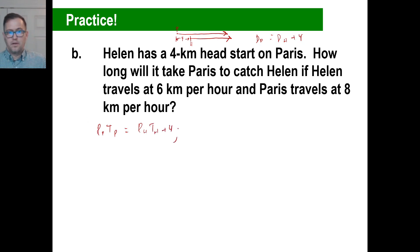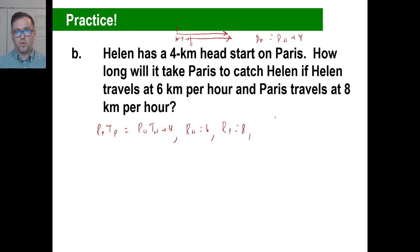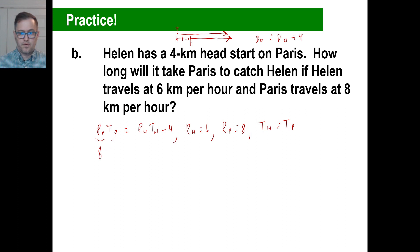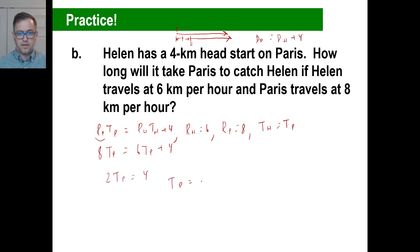Helen travels at 6 per hour, so the rate of Helen is 6. The rate of Paris is 8. There's no time given whatsoever, so we assume their times are the same. Plugging in: 8 times t-sub-P equals 6 times t-sub-P plus 4. That simplifies to 2 times t-sub-P equals 4, so the time of Paris is 2 hours.